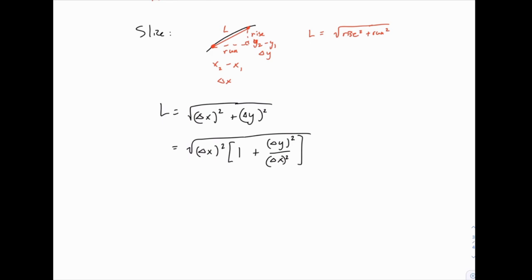And you can double check the algebra if you prefer, but if not we'll move forward. So now if we take the square root of these two pieces individually, the square root of delta x squared is just delta x, and then we have the square root of all of this, and I can rewrite delta y squared over delta x squared, as delta y over delta x, all squared.